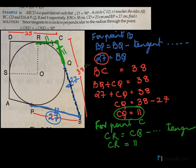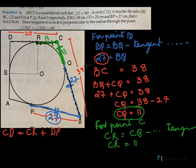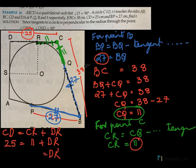Now we are going to find DR. CD is made up of CR plus DR. We know that CD equal to 25, and CR we already found is 11, so DR will be 25 minus 11, which equals 14. So DR equal to 14.